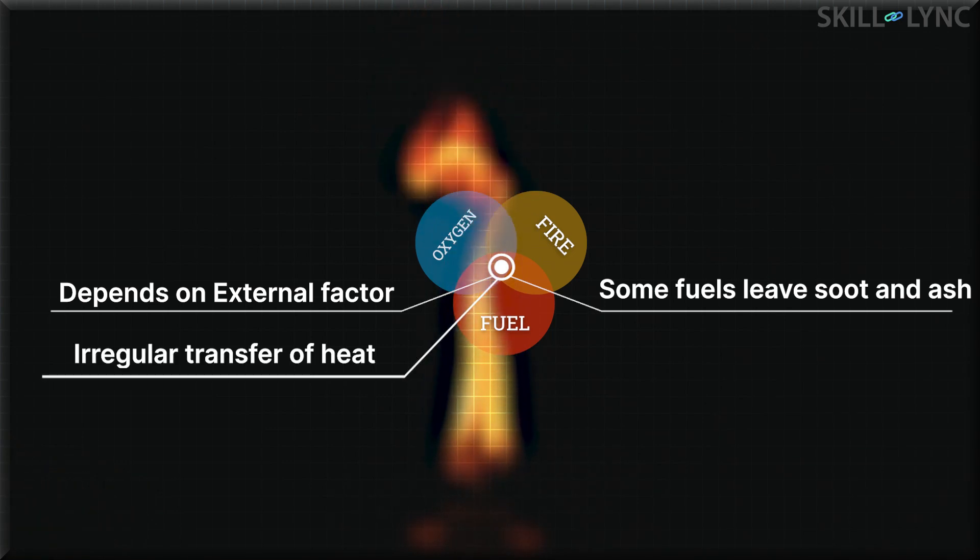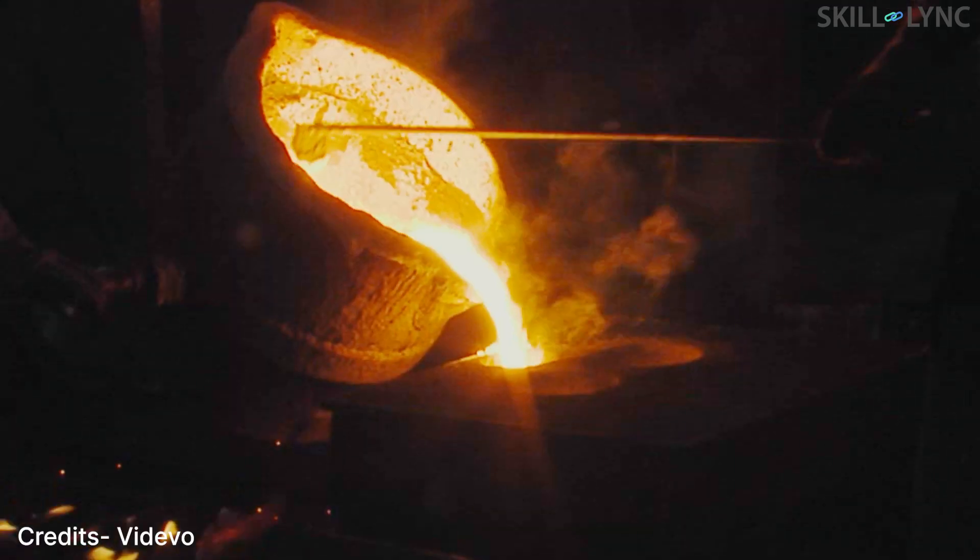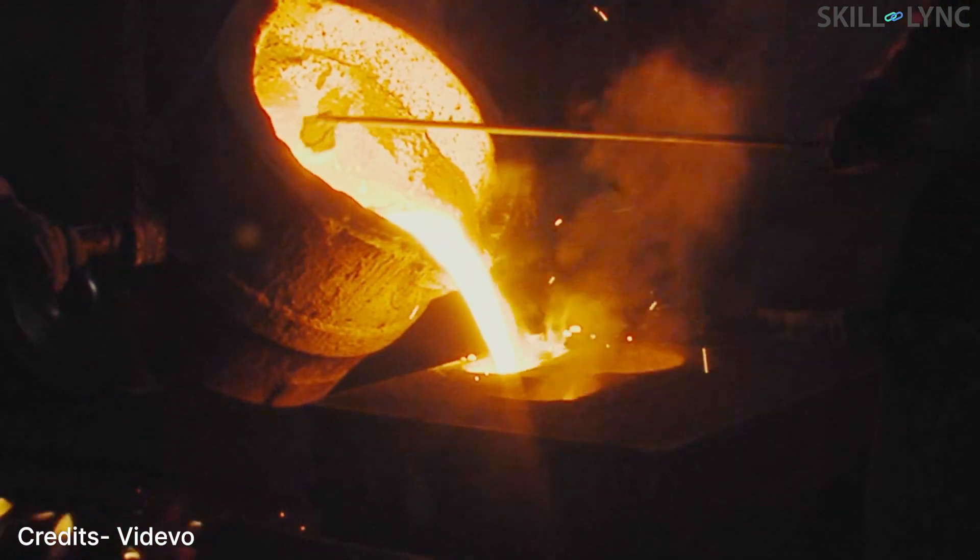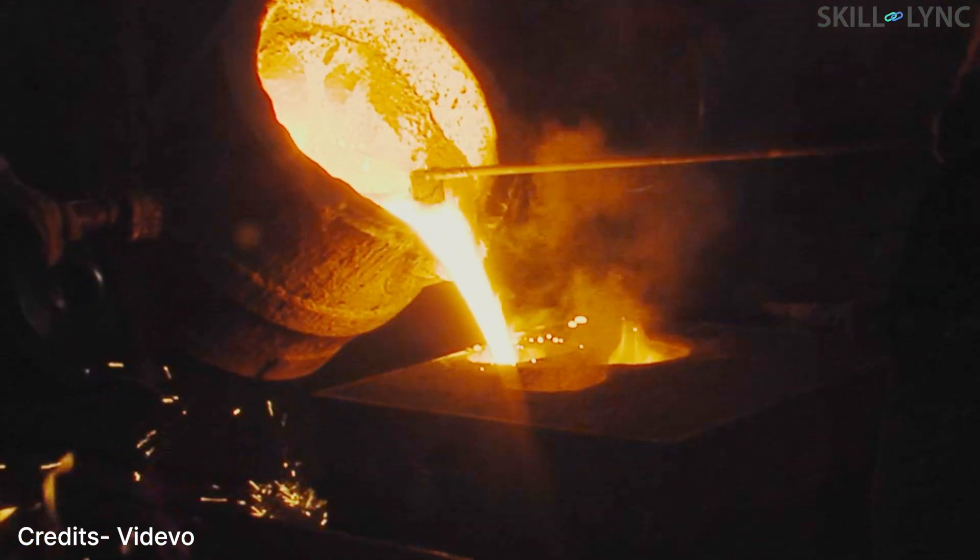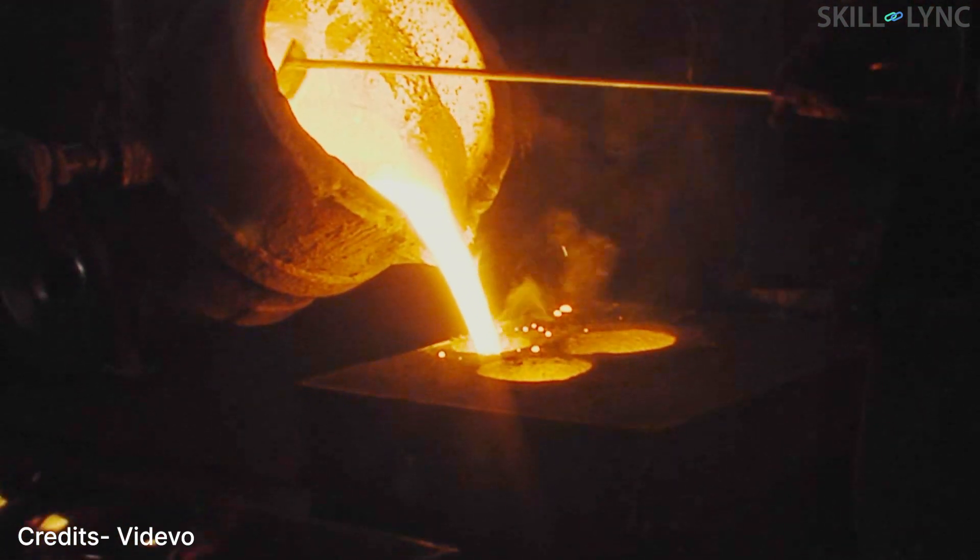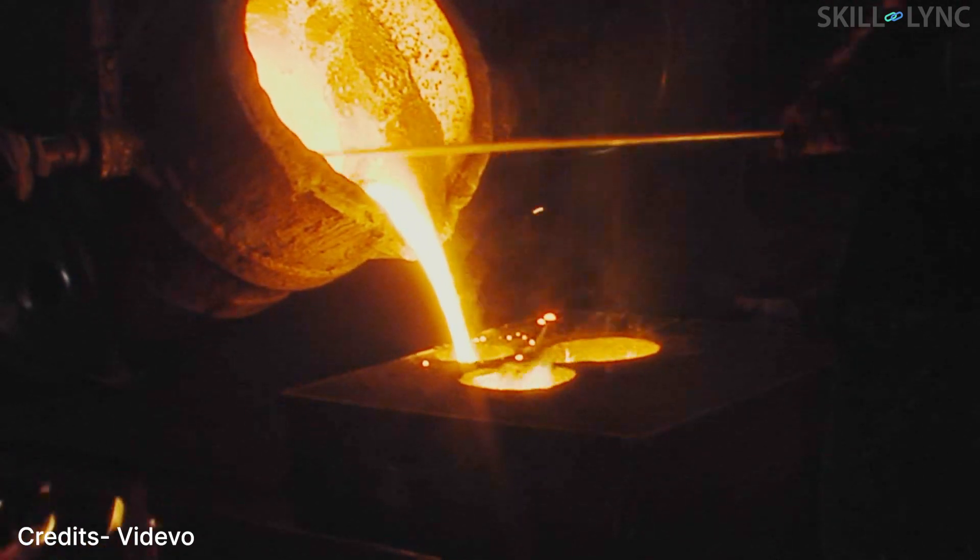The points which are in contact with the fire have a much higher temperature than the rest of the object. This is a huge issue when metals are heated for metallurgical processes like forging. The uneven heat distribution can result in hard and soft spots on the metal, which could sometimes be disastrous and damage the forging equipment.